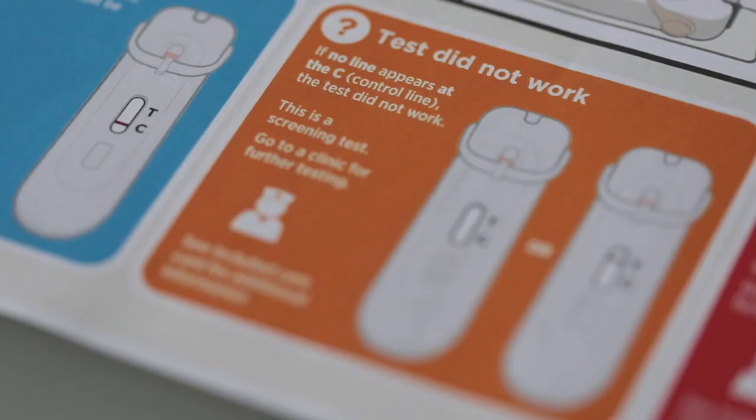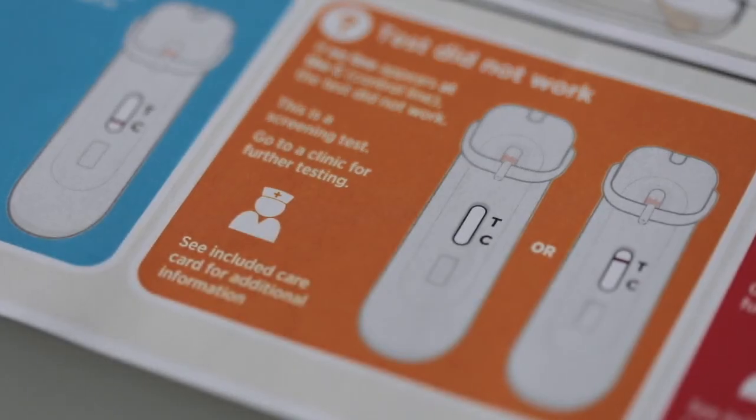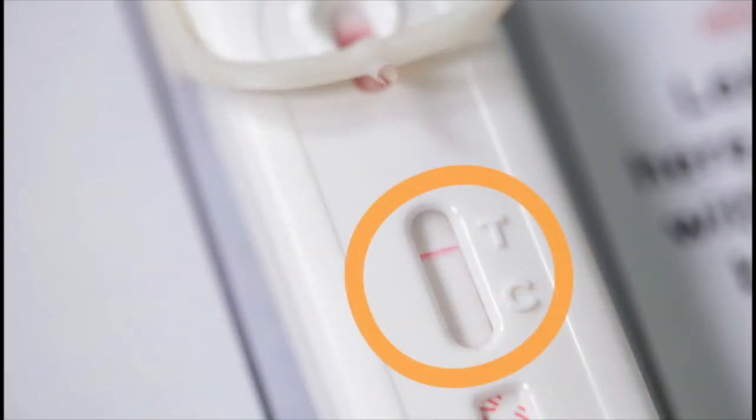Look in the orange box called test did not work. If no line appears next to the C, then the test did not work, even if a line appears next to the T. Because this is a screening test, go to a clinic for further testing.